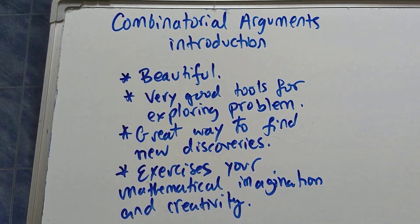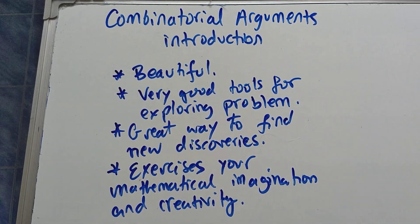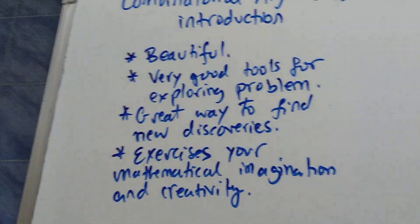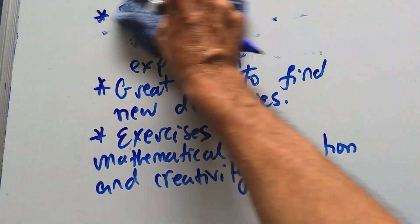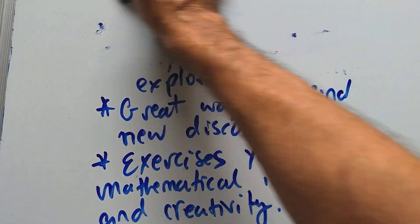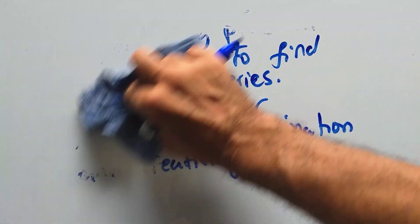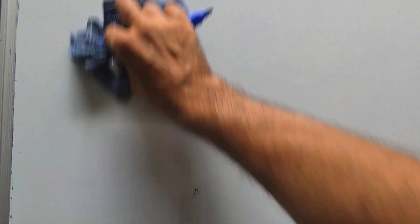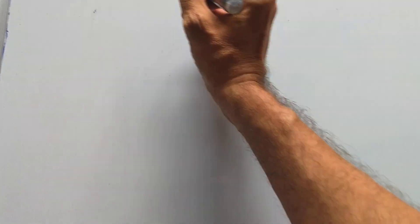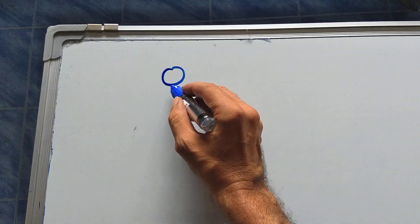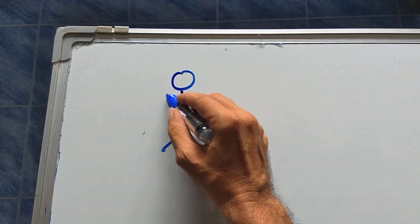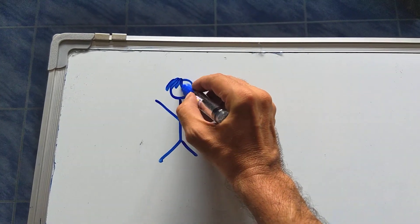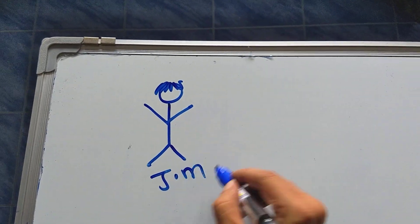Let's start with some really fundamental properties of binomial coefficients. But before we get into that, let me show you what a common combinatorial argument looks like — how does it work?